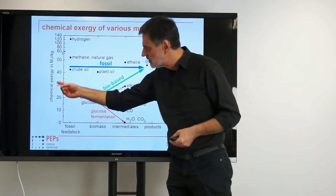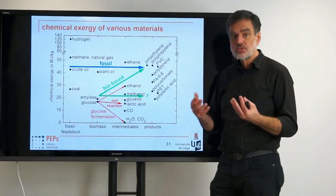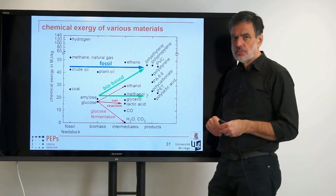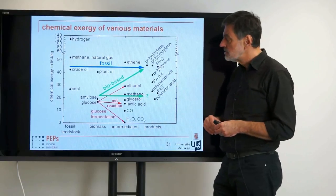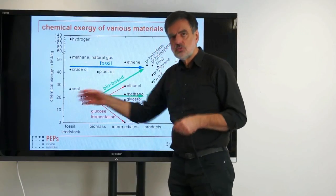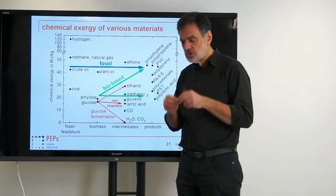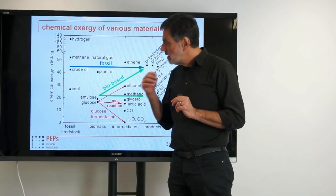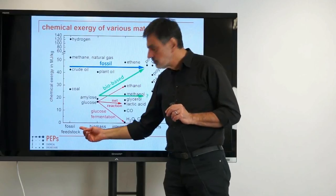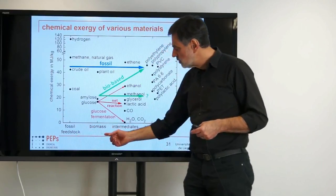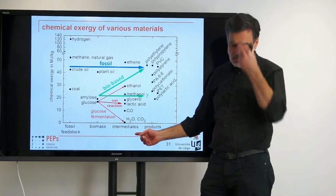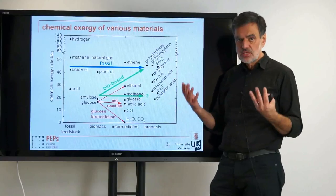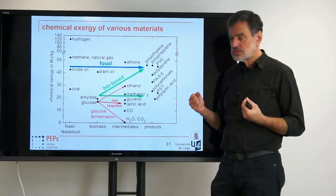Here we regard the chemical exergy, which in chemical processes is one of the major contributions to exergy — the energy bound in the chemical bonds in the molecules. This is plotted and evaluated for different classes of materials: fossil feedstock, biomass, intermediates, typical chemical industry intermediates, biointermediates, and final products. Products are mostly polymers and plastics, which are the biggest products of chemical industry.